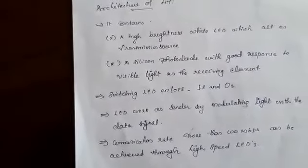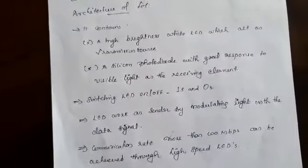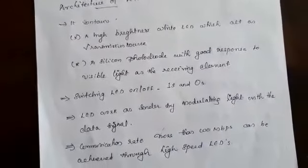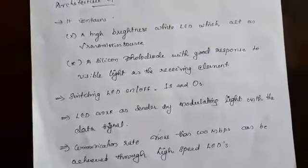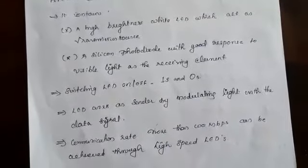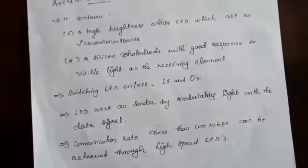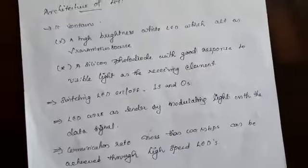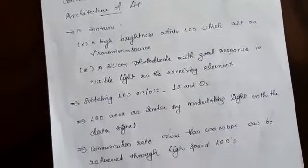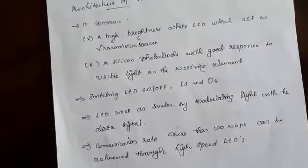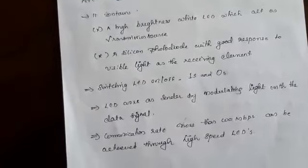Architecture of Li-Fi: it contains a high brightness white LED which acts as a transmission source, and a silicon photodiode with good response to visible light as the receiving element. These are the two components. This is the transmission source LED light. This is a photodiode, the receiving element.